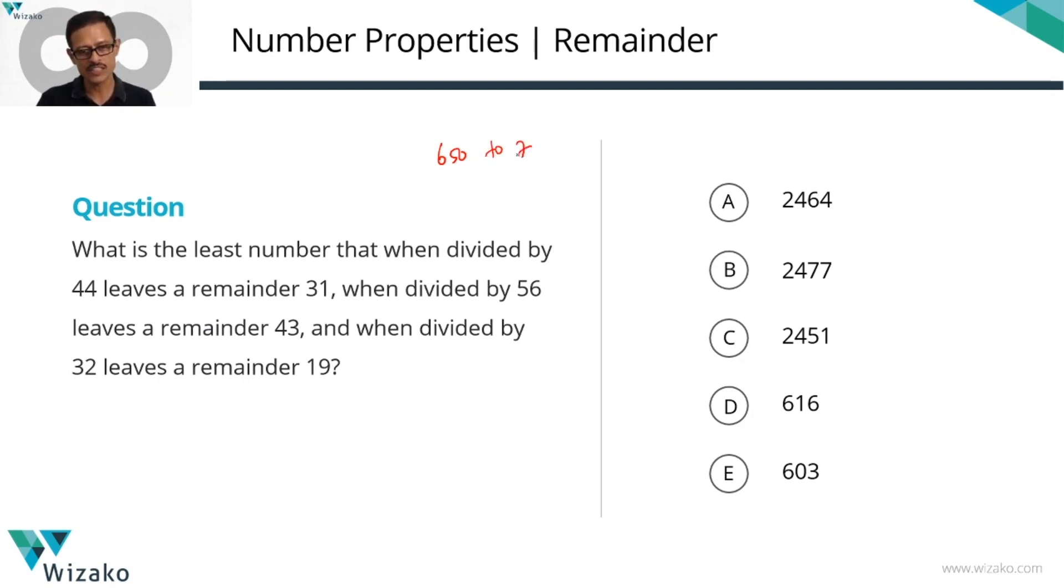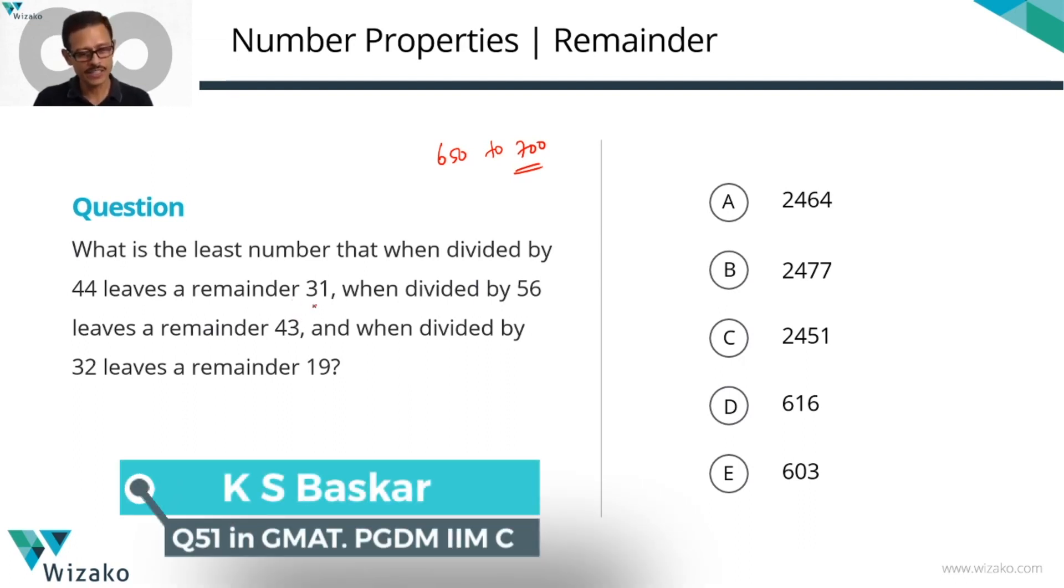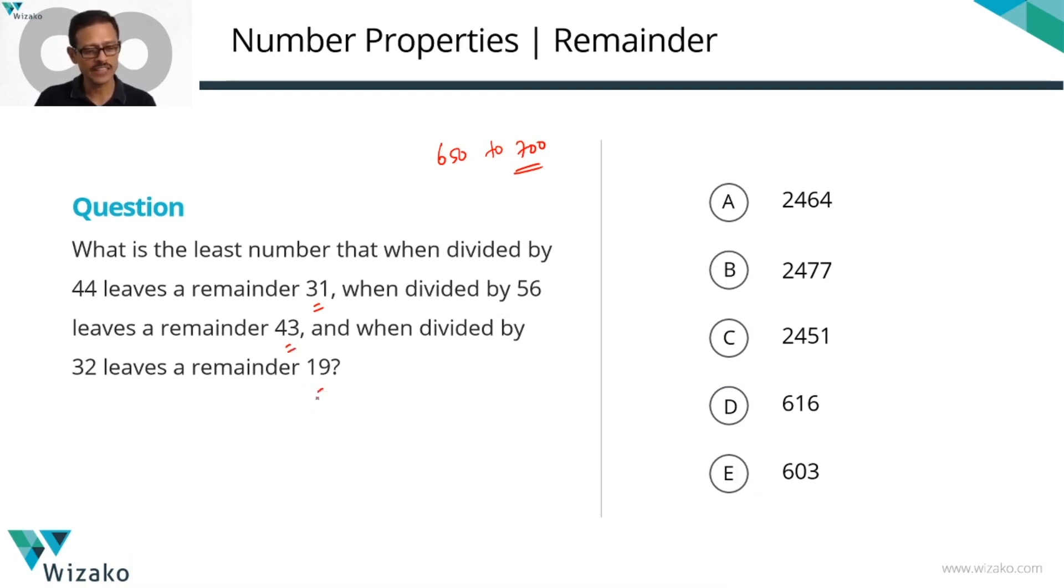Classify this one as the 650 to 700 level questions. Let's get started. The first one is a problem-solving question. This deals with concepts about remainders. What is the least number that when divided by 44 leaves the remainder of 31, when divided by 56 leaves a remainder of 43, and when divided by 32 leaves a remainder of 19?